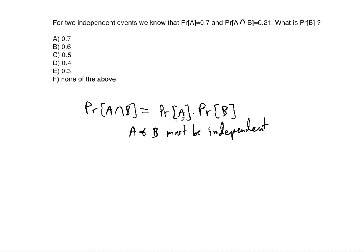So now let's substitute in the numbers and then we'll find out what the probability of B is. We're going to have 0.21 is equal to 0.7 times the probability of B. So solving for the probability of B we get 0.21 divided by 0.7.